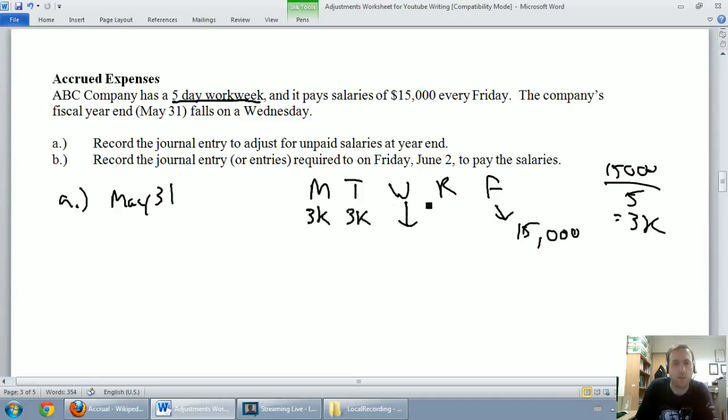So $3,000 for Monday, $3,000 for Tuesday, $3,000 for Wednesday, $3,000 for Thursday, and $3,000 for Friday. We've got to say to ourselves, how much have they earned up to Wednesday? They've earned Monday and Tuesday for sure, and we assume our fiscal year end happens at the end of day on Wednesday, so they've in fact earned for Wednesday. So our employees have earned $9,000 worth of salaries for which they've not been paid.